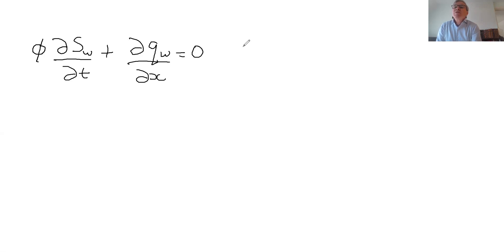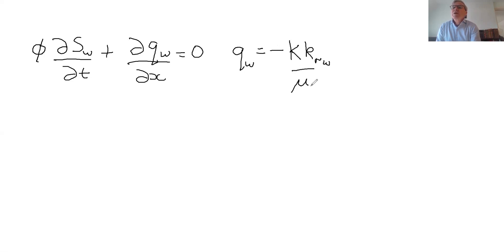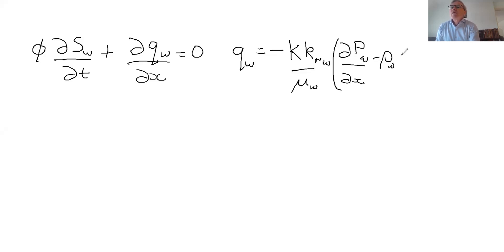Qw — here we have the absolute permeability, we have the relative permeability of water, we have the viscosity of water, and then we have dPw/dx minus rho_w times g_x.